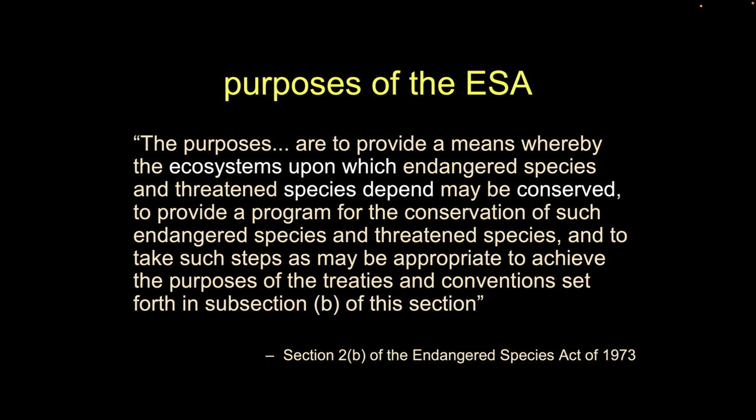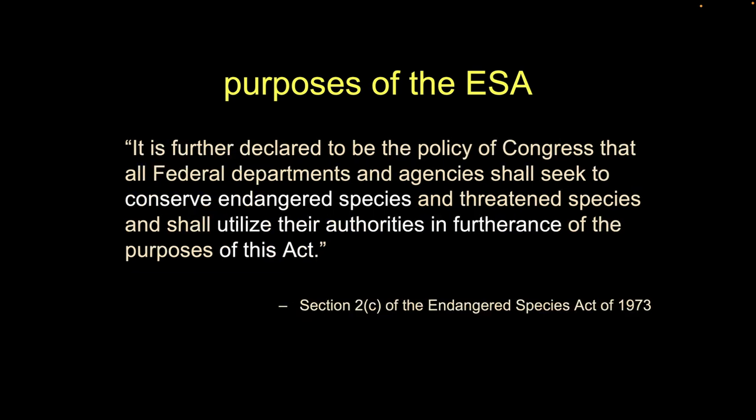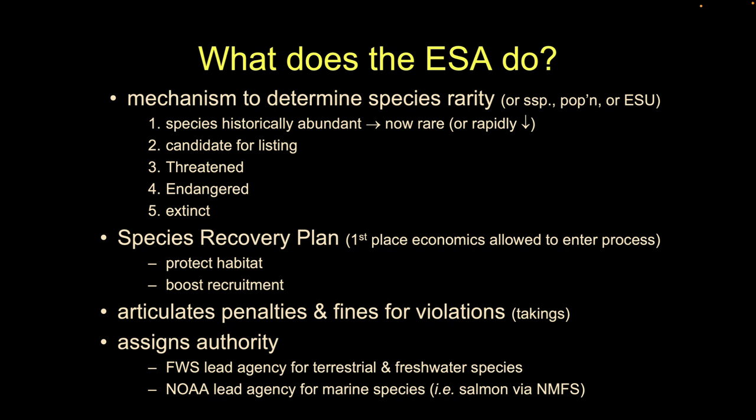We do not have an endangered forest law — we have an endangered species law. The ESA sets forth a mechanism to determine rarity. Traditionally this was about species, but in the decades since we've also applied it to subspecies, populations, and so-called ESUs — Evolutionarily Significant Units — which is essentially a smaller geographic unit of critters. For example, we manage our salmon on the West Coast by ESU, with different chunks of the coast broken into different ESUs depending on how many rivers are in that area.